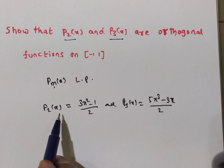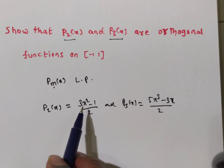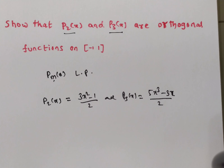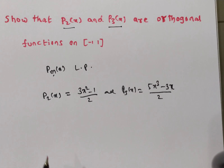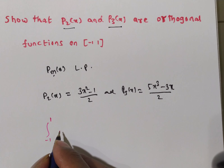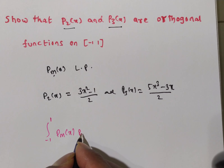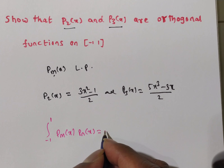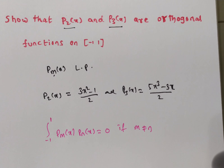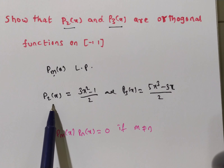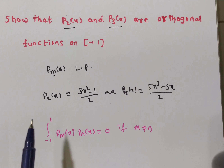Now, what we have to prove is that these two polynomials or functions are orthogonal. We have the definition of orthogonality for Legendre polynomials: the integral from minus 1 to 1 of Pm of X times Pn of X equals 0 if M is not equal to N. Then we can say Pm of X and Pn of X are both orthogonal functions. Here we are given P2 of X and P3 of X, and we have to prove these two are orthogonal.